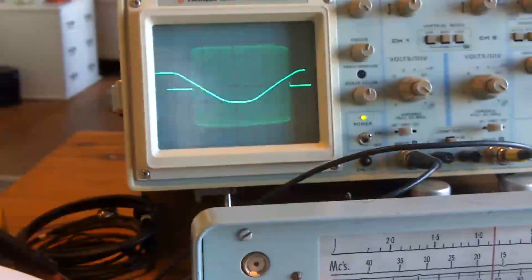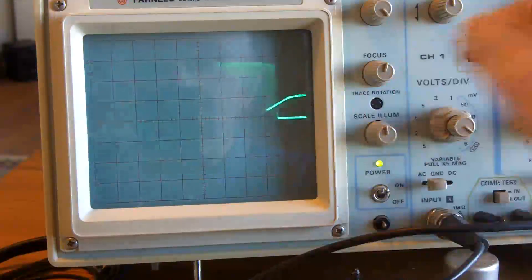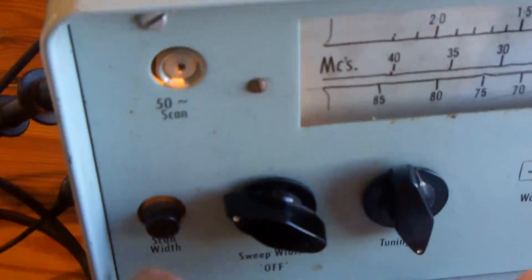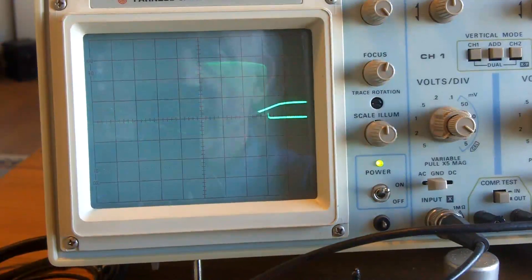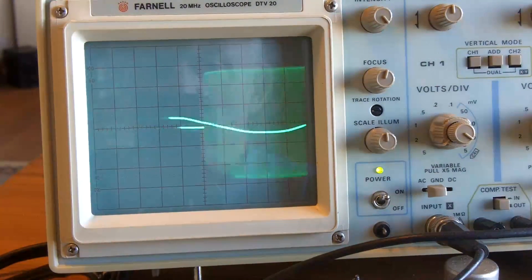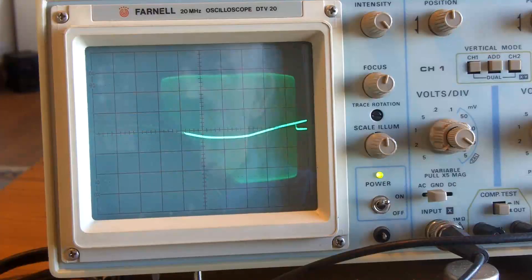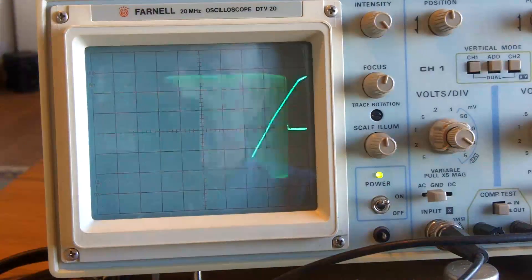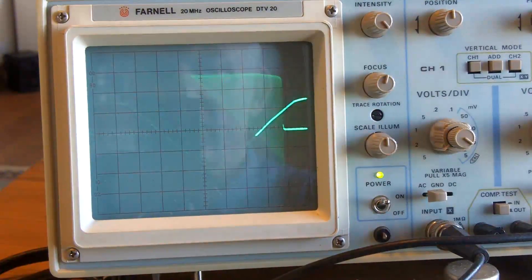And looking at the scope again, you could be forgiven for thinking, well that looks as though it's doing something right. If I adjust the scan width, that's this little one down here, you can see that doesn't seem to be doing a lot to the scan, but it's adjusting that output. So you can imagine that going out and doing something.